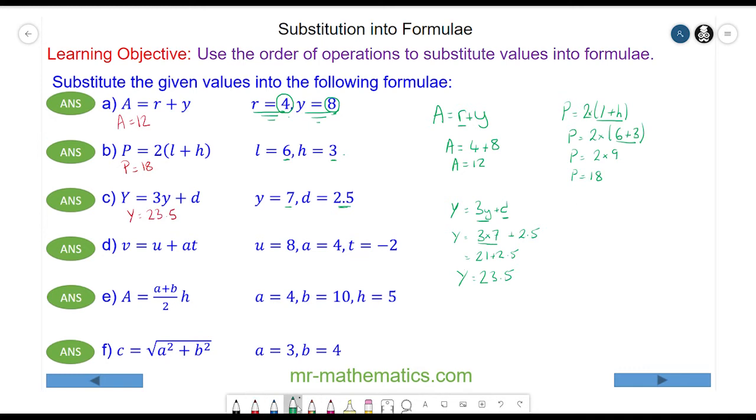Question d: v equals u plus at. We'll substitute in u equals 8, a equals 4, and t equals negative 2. So v equals 8 plus, and I'm going to put the at in brackets so that will help me later, 4 multiply by negative 2.